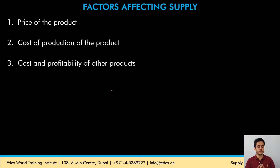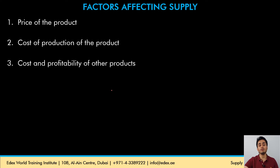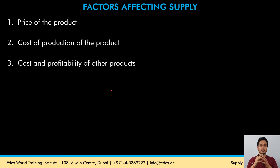The cost and profitability of other products also matter. The producer might be dealing in other products as well. When the cost is falling or the profits of other products are rising, the producer will shift resources from the current product to the more profitable products, and hence the supply of the current product will fall. Whereas when the other product is less profitable, the producer will shift resources back to the current product and increase its supply.